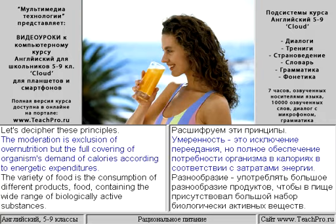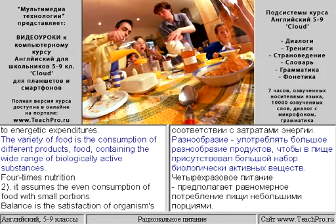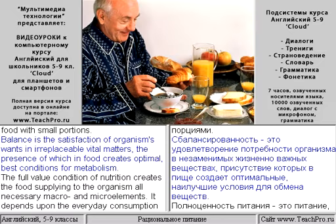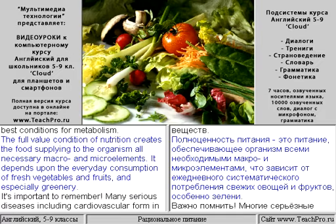Moderation is the exclusion of over-nutrition while fully covering the organism's demand for calories according to energetic expenditures. The variety of food is the consumption of different products containing a wide range of biologically active substances. Four-times nutrition assumes the even consumption of food in small portions. Balance is the satisfaction of the organism's needs in irreplaceable vital matters, the presence of which in food creates optimal conditions for metabolism.